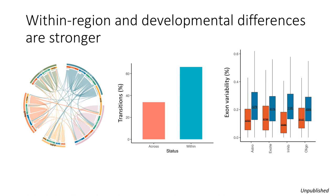So this is just the same information in the bar plot format where I'm showing that transitions across brain regions are fewer and less frequent than the ones within. And additionally, an interesting finding was that exon variability is higher when it comes to developmental time points in blue than in adult time points which is in red.